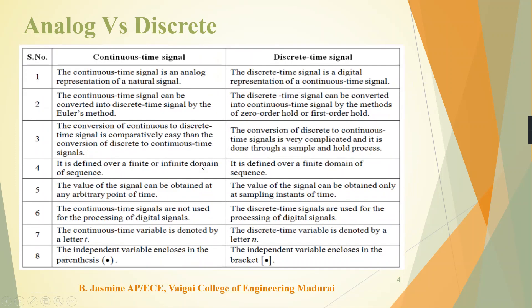What is the comparison between analog versus discrete? The continuous time signal is always a natural signal — for example, audio voice or vibrations. The discrete time signal is a digital representation of the continuous time signal after sampling. A continuous signal can be converted to a discrete time signal by Euler's method, and a discrete time signal can be converted back to a continuous time signal by zero order hold or first order hold. In a continuous time signal, a finite or infinite domain of sequence is used, whereas in a discrete time signal, only a finite domain of sequence is used.